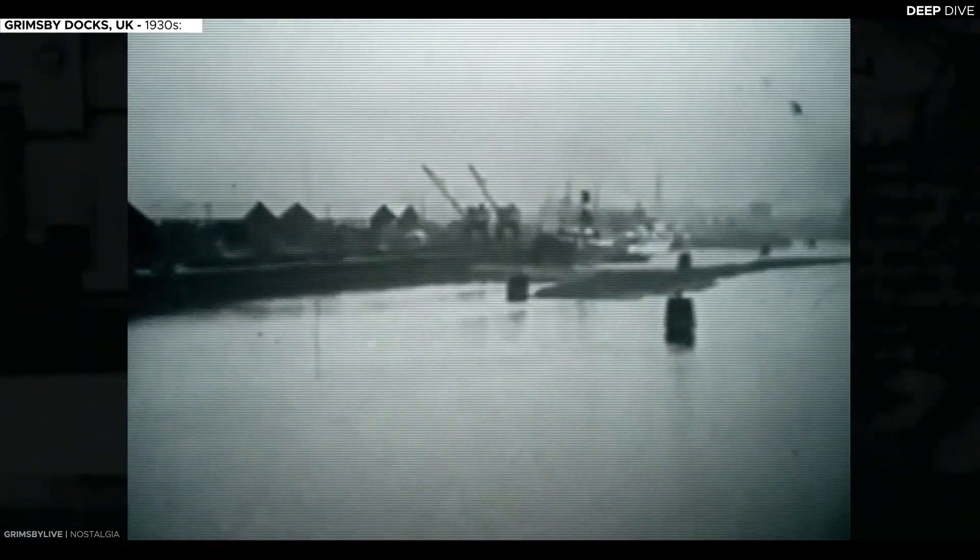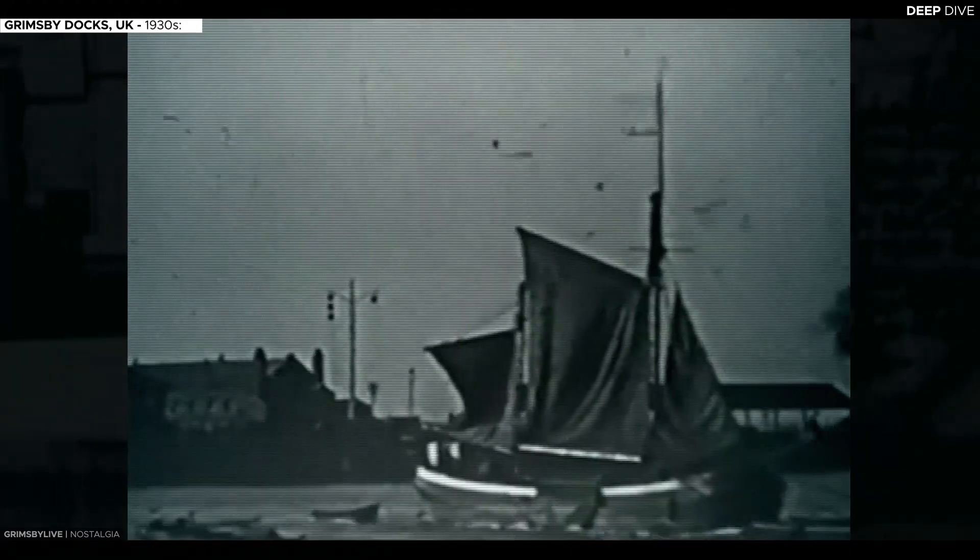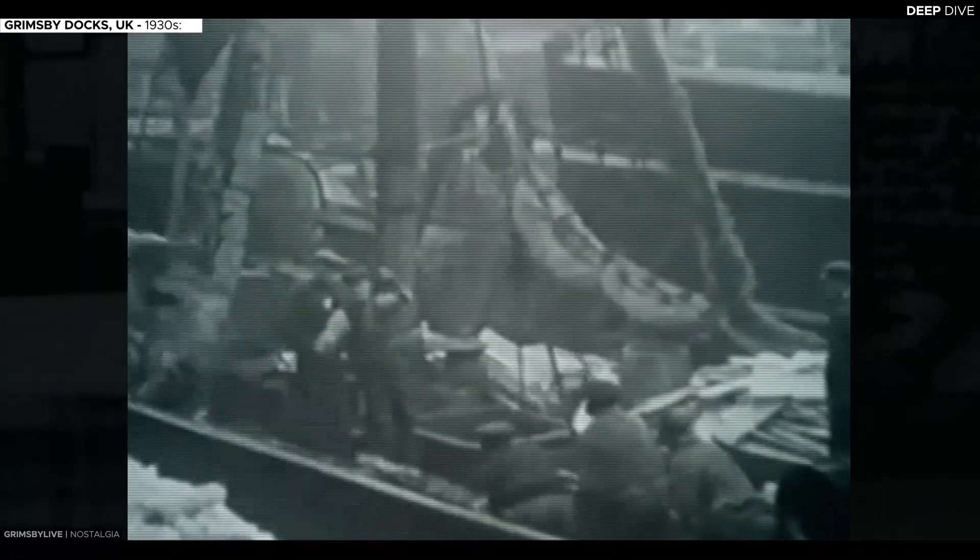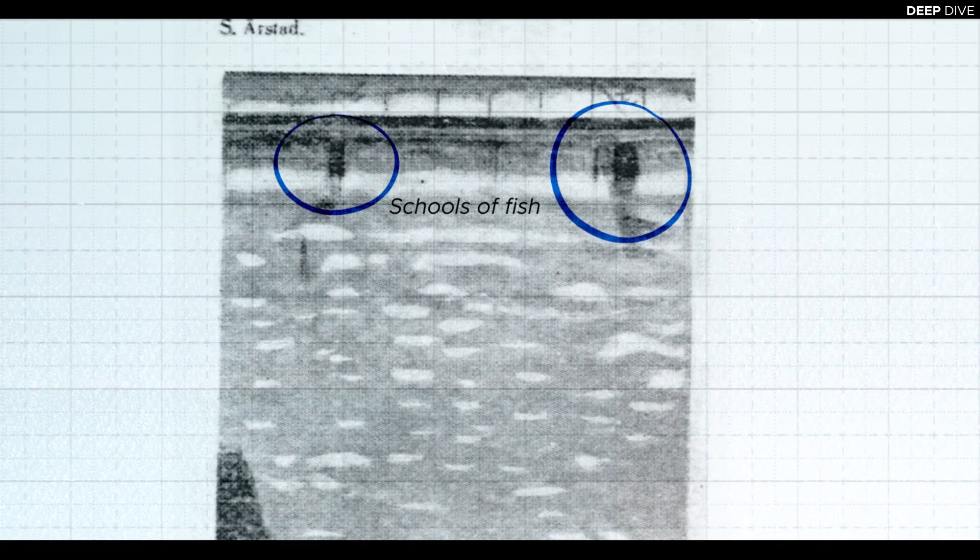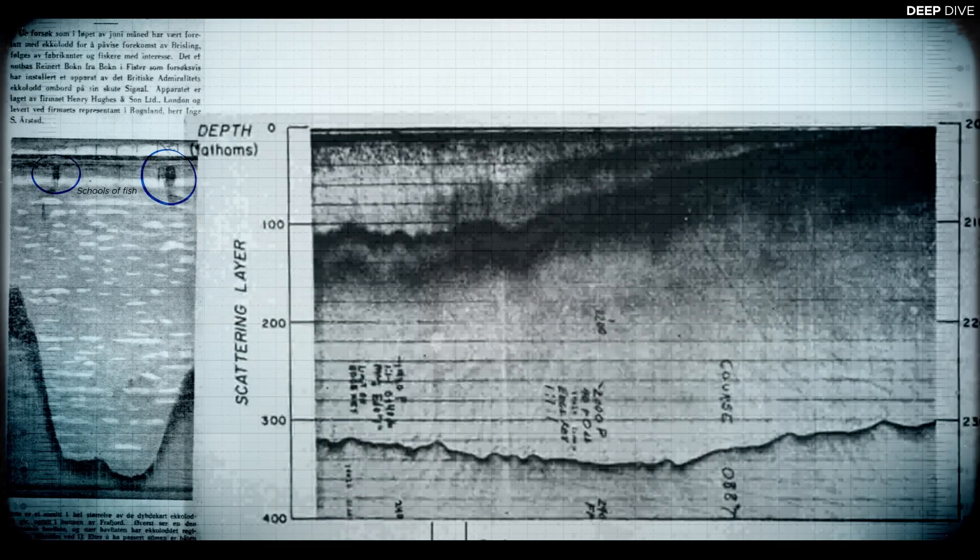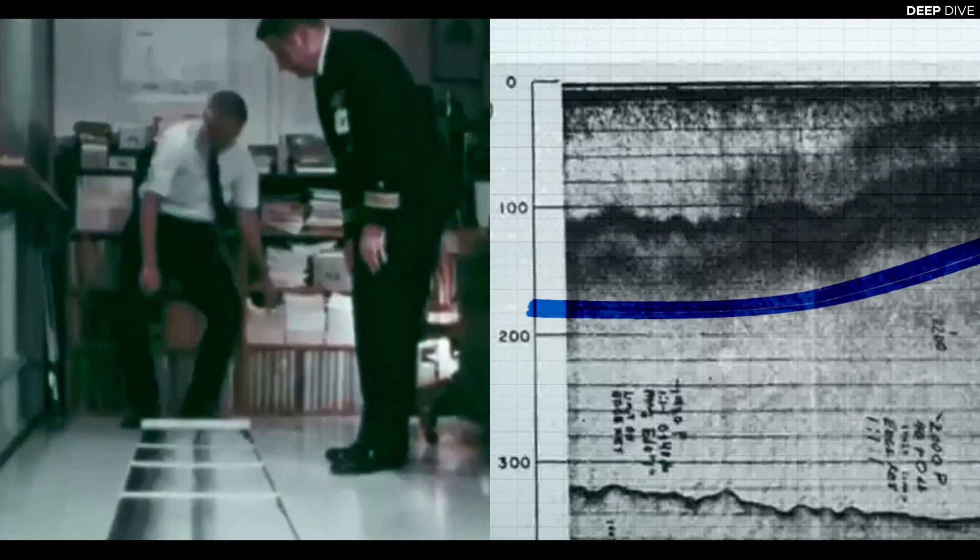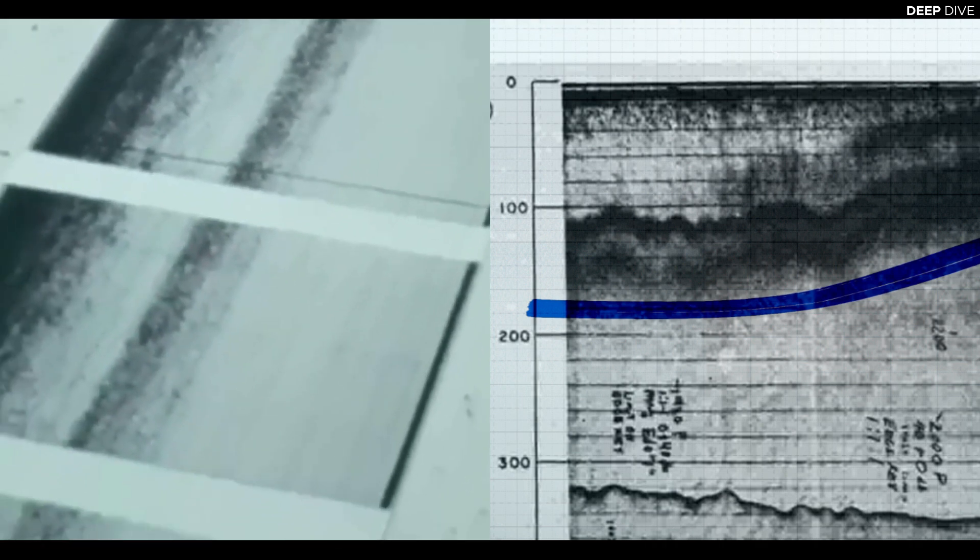That animals could scatter sound was also not a new discovery. Ever since the 1930s, echo sounders had been successfully used above known fishing grounds to identify schools of fish. What, however, was surprising was the magnitude of this pattern. These weren't distinct groups of animals, but continuous layers, layers that seemed to stretch without end for miles and hundreds of miles in every direction.